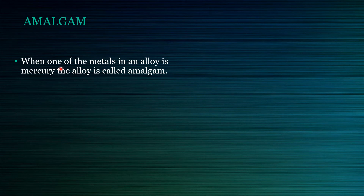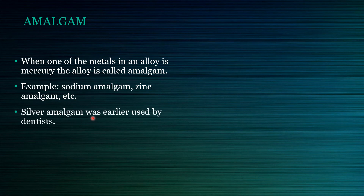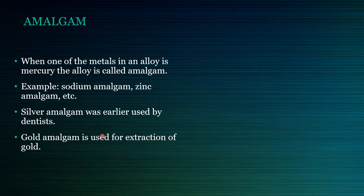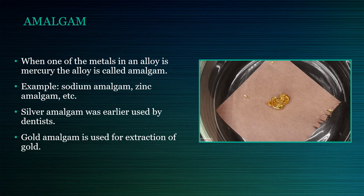Now we are going to learn about amalgam. Amalgam is an alloy of mercury with another metal. It may be a liquid, a soft paste or a solid depending upon the proportion of mercury. These alloys are formed through metallic bonding. Almost all metals can form amalgam with mercury except iron, platinum and tungsten. Silver-mercury amalgams are important in dentistry, and gold-mercury amalgam is used in the extraction of gold from ore. In this picture, you can see a thin layer of gold being placed on a drop of mercury and how the mercury dissolves the gold, converting it into amalgam. Amalgam has various industrial applications.